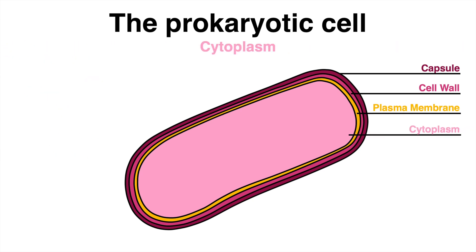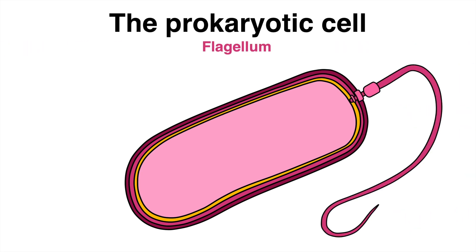Inside the cell, there is a region called the cytoplasm. The cytoplasm is a gel-like substance that contains all of the cell's components and is the site of many cellular processes.